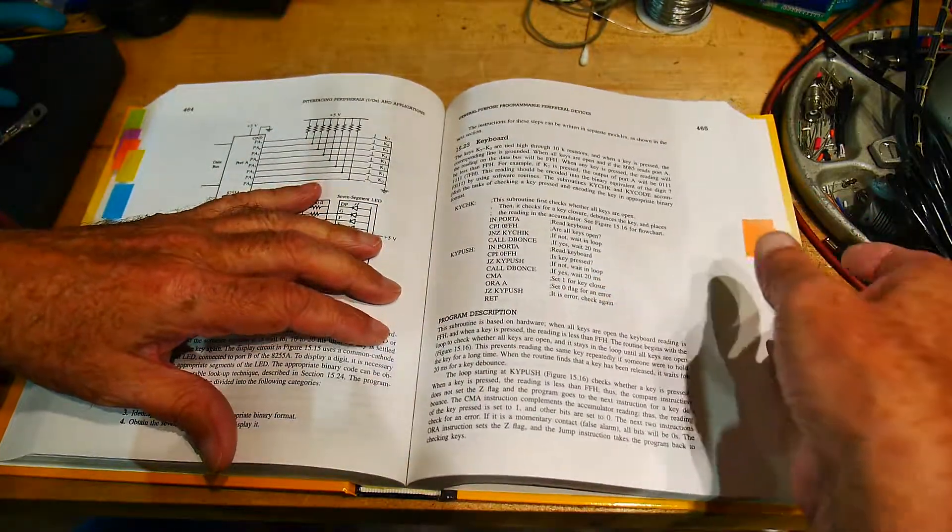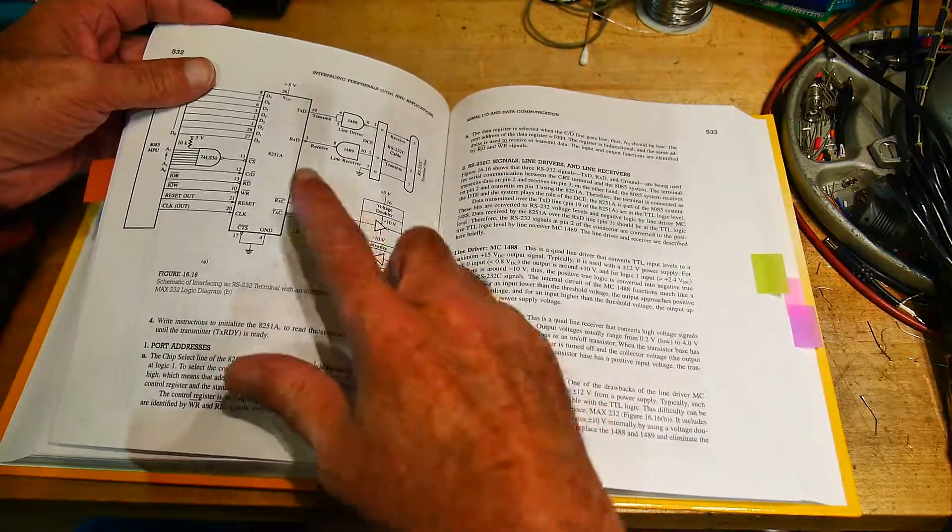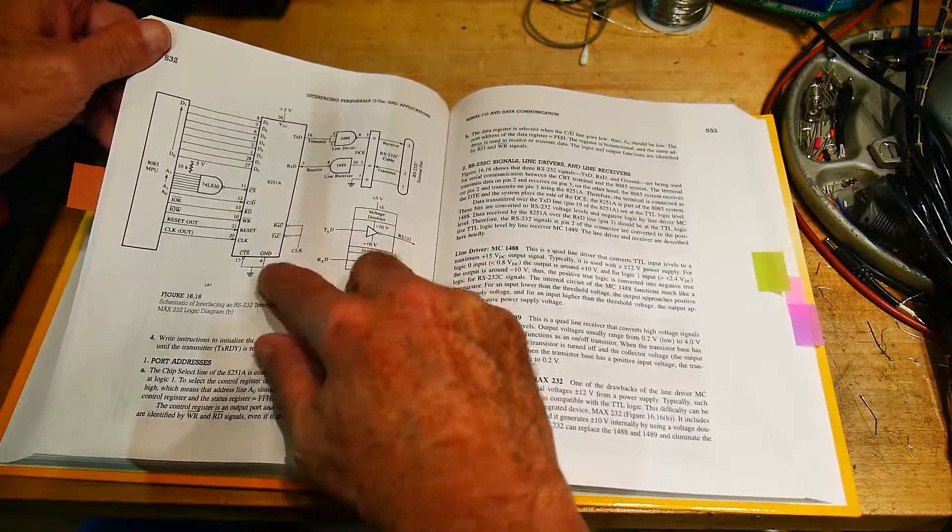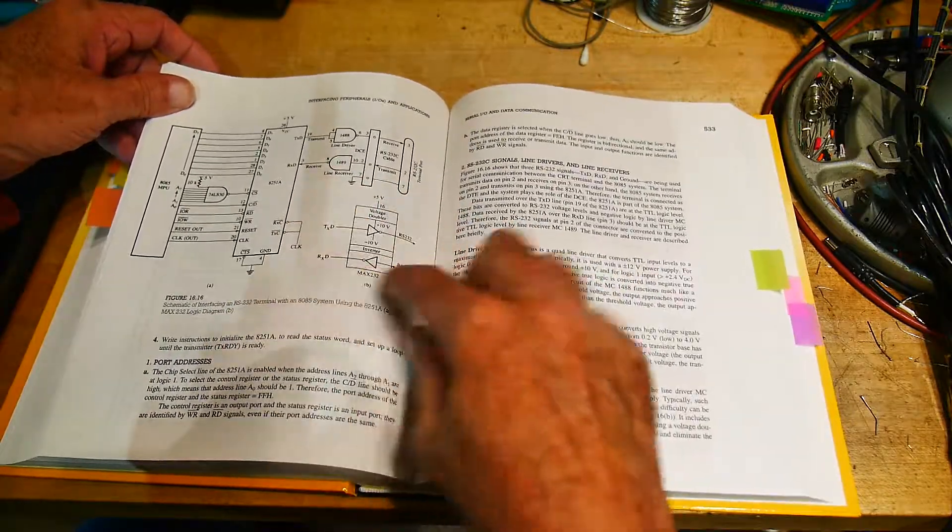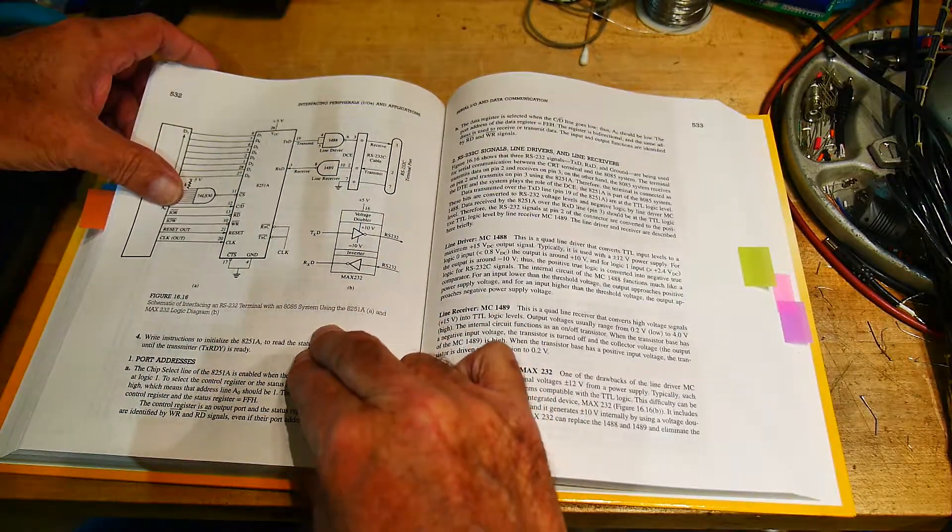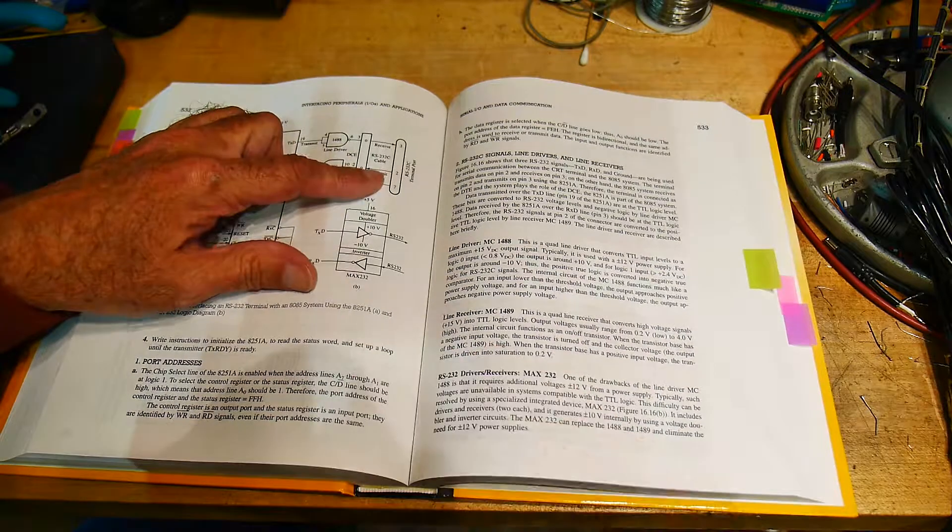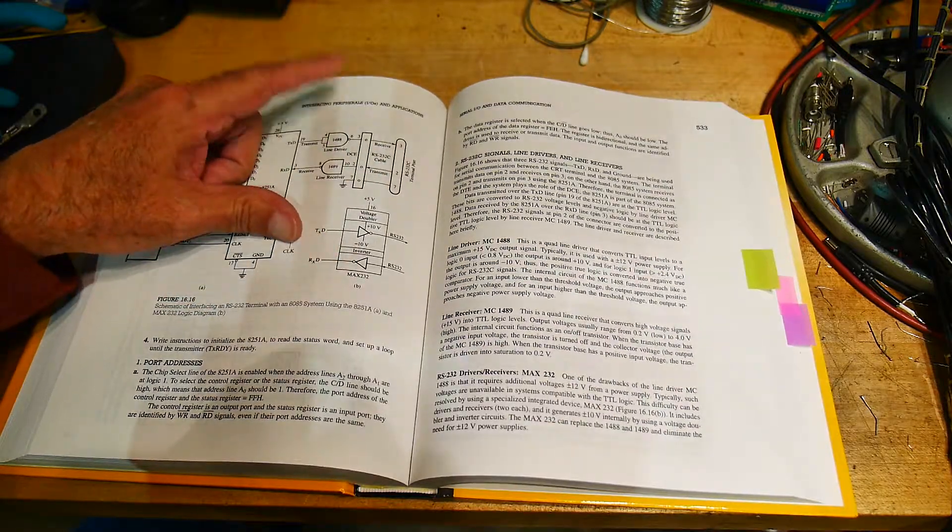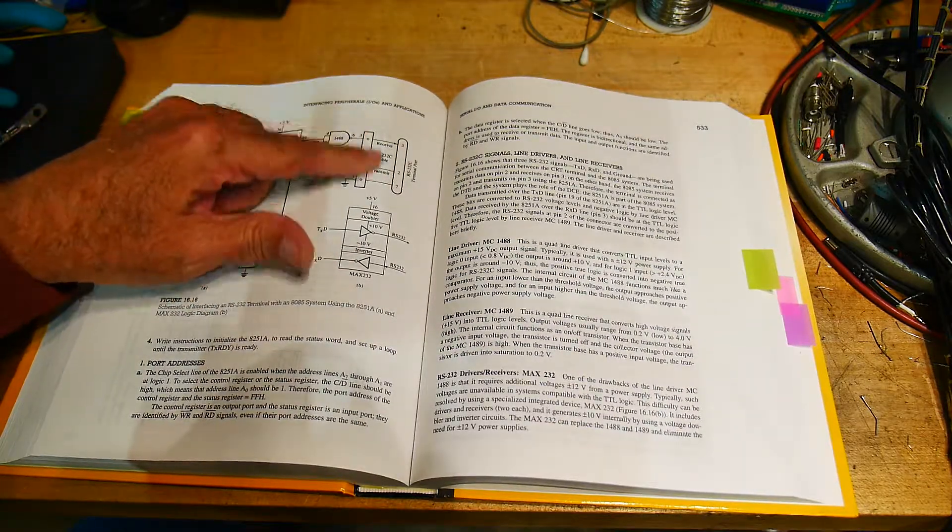It also goes into serial communications, the 8251 which can be a bit confusing. So this is a good chapter to talk about serial interfacing and actual RS-232 level conversions like a MAX232 chip and things like that.